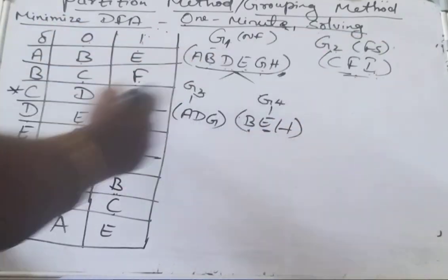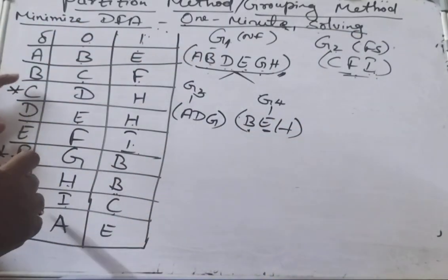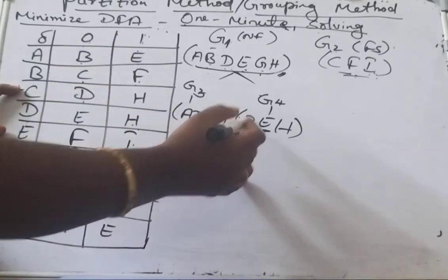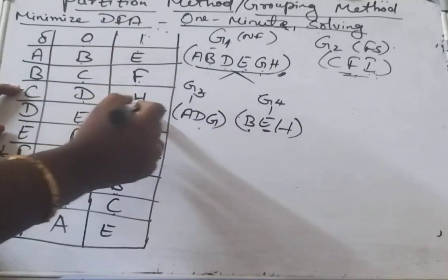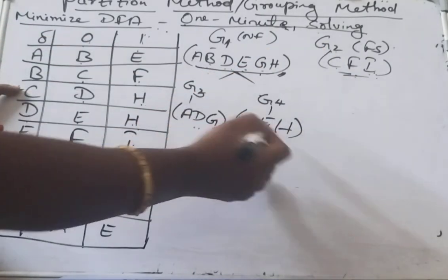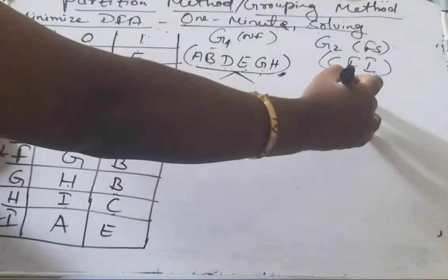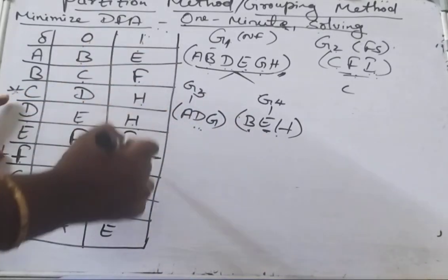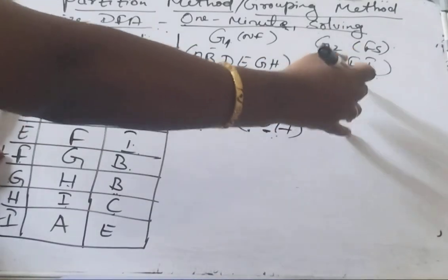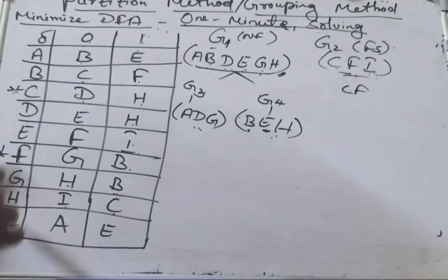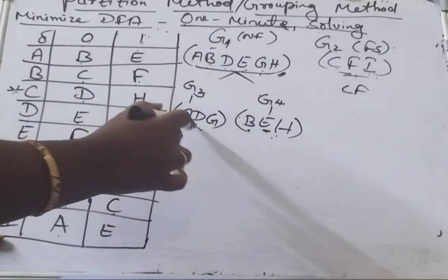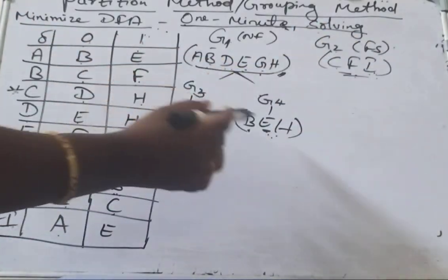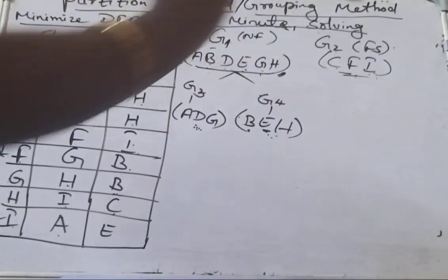Now check can we partition G2, which is C, F, and I. C on 0 goes to D and on 1 goes to H — both in G3 and G4 respectively. F on 0 goes to G (in G3) and on 1 goes to B (in G4) — same groups as C. I on 0 goes to A (in G3) and on 1 goes to E (in G4) — also same groups. So all three final states go to G3 and G4 on reading 0 and 1. We cannot partition C, F, I further — they remain in the same group.